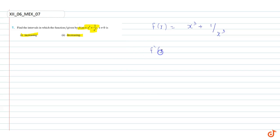So, f'(x) is equal to, x cube is 3x square plus 1 upon x cube. So, derivative of 1 upon x cube is minus 3 upon x to the power 4.